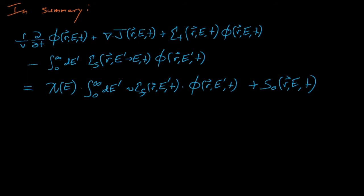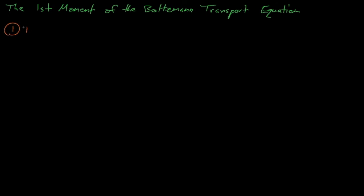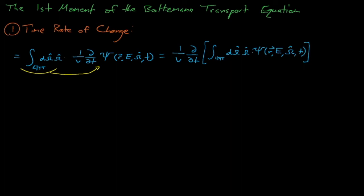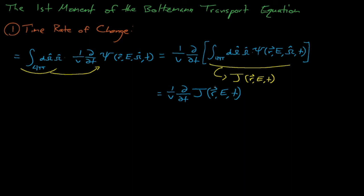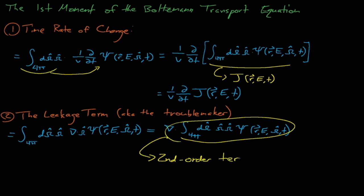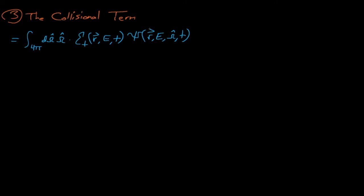Now we will take the first moment of the Boltzmann transport equation with respect to omega. For the time rate of change term, we simply repeat our trick from before of moving omega inside of the time derivative, which gives us 1 over v times the time derivative of the neutron current. The leakage term is more difficult, and we'll see that this term is actually the lone troublemaker in this derivation. We can repeat our trick from before and bring the del operator to the outside of this integral, which leaves us with an integral that is actually the second moment of the angular flux. We haven't defined the second moment yet, and eventually we'll have to deal with this term, but for now let's just leave it. Moving on to the collisional term, this term is one of the easiest to handle, and we see that it is simply equal to sigma total times the neutron current.